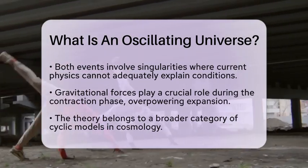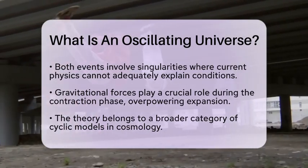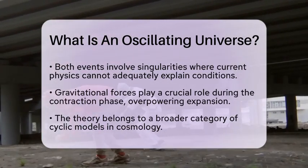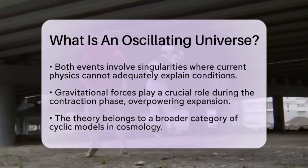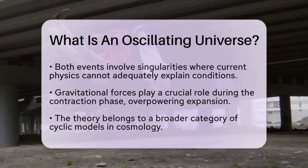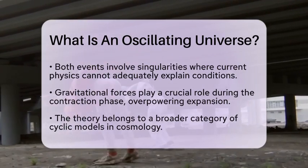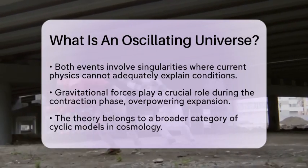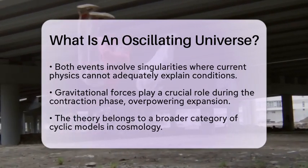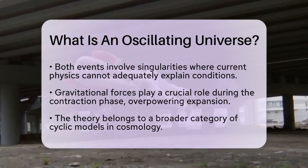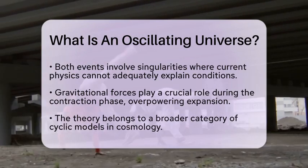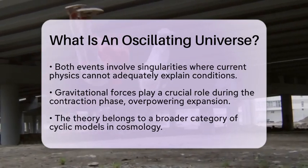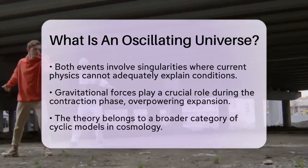Both the Big Bang and Big Crunch involve singularities, where densities and energies are so high that our current understanding of physics breaks down. The gravitational forces play a key role during the contraction phase — they eventually overpower the expansion, causing everything to collapse back into a singularity once again.